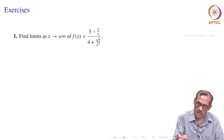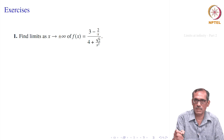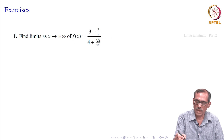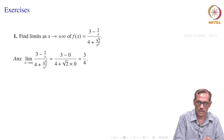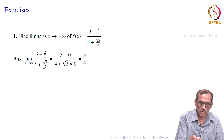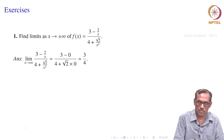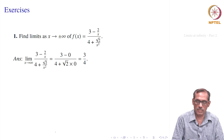As you see intuitively, when x goes to infinity, 1/x goes to 0. So with the algebra of limits — which also holds for limits at infinity — this factor becomes 0 and this also becomes 0. So finally it should give 3/4. The limit as x goes to infinity of (3 minus 2/x) divided by (4 plus root of 2/x²) gives you 3/4.